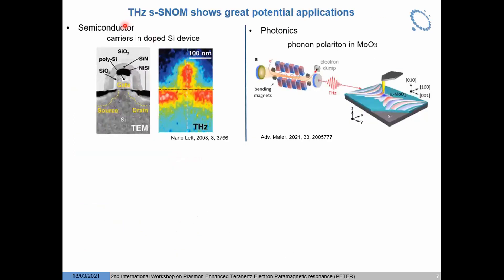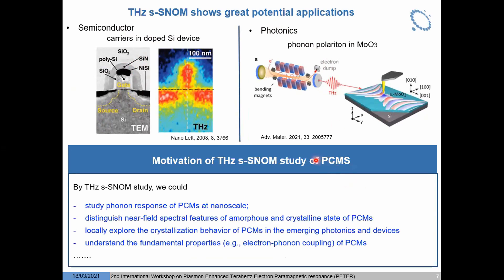For example, in semiconductor technology and photonics applications. In one paper, terahertz s-SNOM was used to image doped nanoscale devices to reveal carrier properties. In another paper, it maps terahertz phonon-polaritons in MoO3. But the terahertz s-SNOM study of phase change material had not been done yet. By terahertz s-SNOM study, we could study the phonon response of phase change material at the nanoscale, distinguish near-field spectral features of the amorphous and crystalline stages, and locally explore the crystallization behavior in imaging, photonics, and devices.